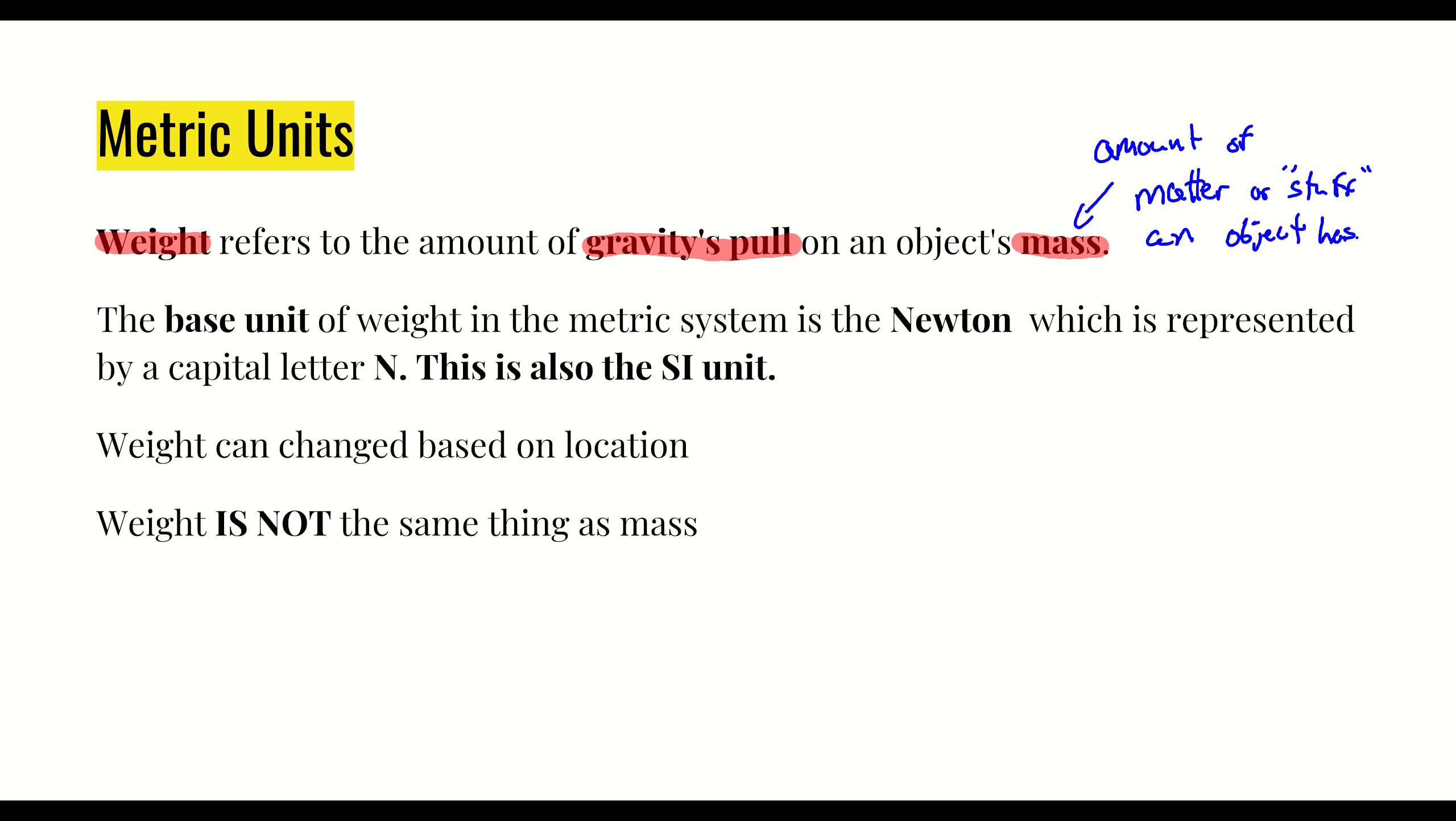So it's related to this idea of mass, however gravity's pull is this new piece. So gravity is the new piece when it comes to weight, which is what makes weight weight. The base unit of weight in the metric system is the Newton, which is represented by a capital letter N. And this is also the SI unit.